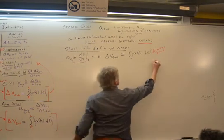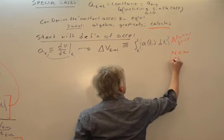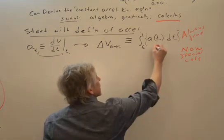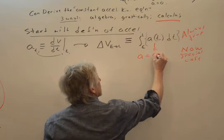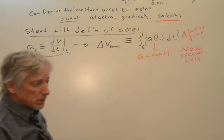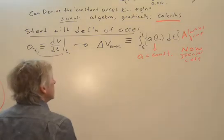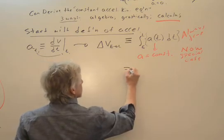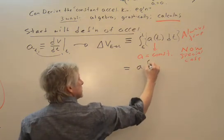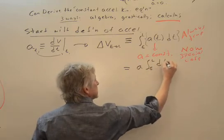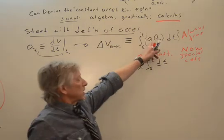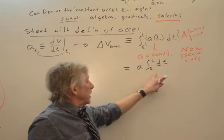Aha! Now, special case. So the special case now is that acceleration equals a constant. So now that this, whatever I get beyond this doesn't work unless the acceleration is constant. All right, cool. So then what's that equal to? What does that tell me I can do? Oh, if the acceleration is a constant, that's just a, and I can pull it out. Acceleration is constant. It's a constant value. It doesn't change over time. And I do this.